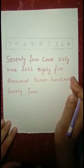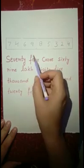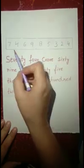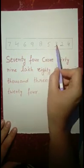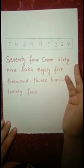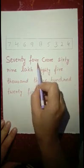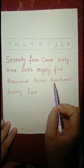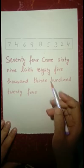Hello everyone, welcome to today's class. Let's get started. Look at this number — it is a nine-digit number: 746985324. This number can be read as 74 crore, 69 lakh, 85,324.